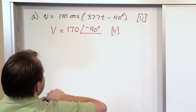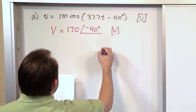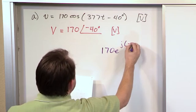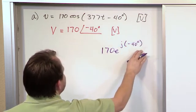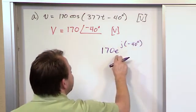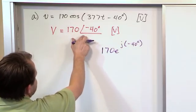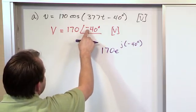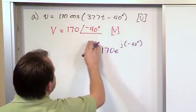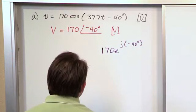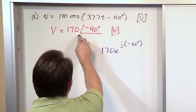This is the way you would write the phasor down, but just don't forget that it's really a shorthand way of saying 170 e to the j negative 40 degrees. You would drive yourself crazy writing this down everywhere. E to the j is implied when you write it like this. This is the true math. This is how we're carrying it through our calculations as a shorthand notation. So you won't see this very much. You're going to see this all the time.